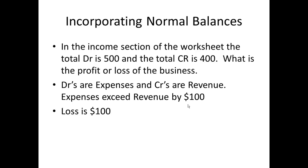Well you know they're all income or expense items or revenue or expense items. And we know that debits are expenses and credits are revenues. So expenses exceed revenues by $100. Therefore the business has made a loss of $100. Again using the accounting equation.